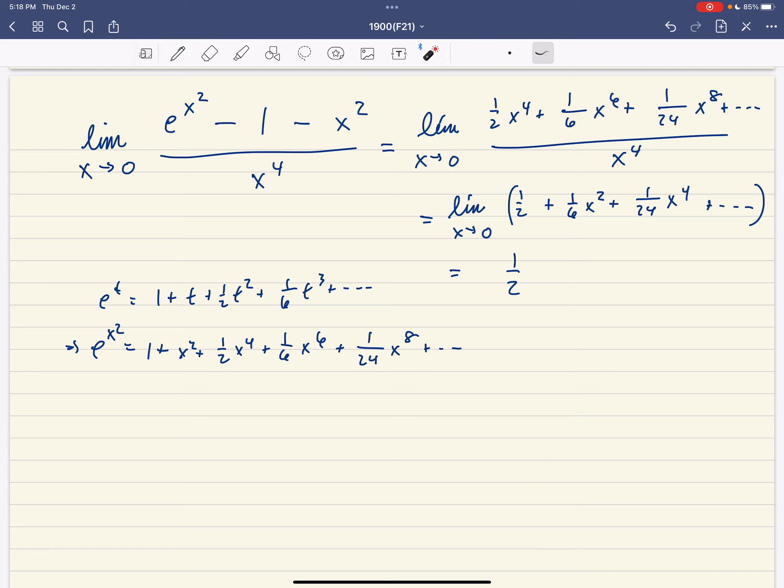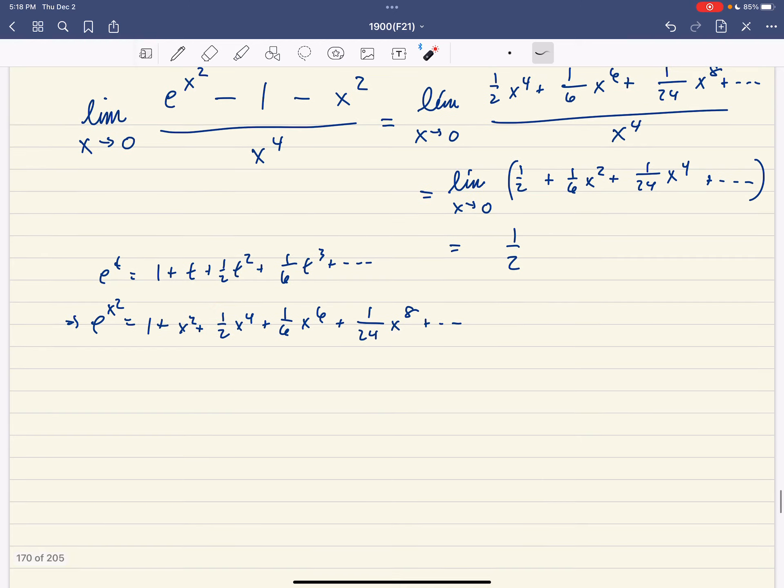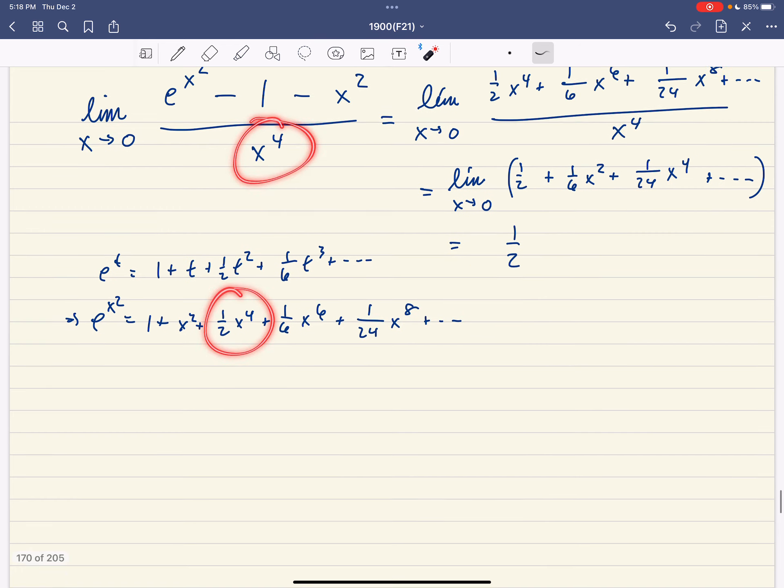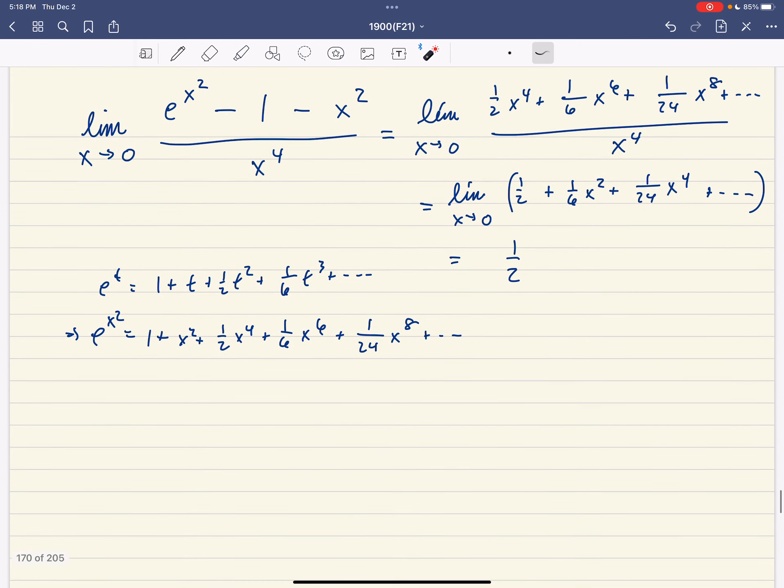So we can use Taylor series to evaluate that limit right away. I know that that's going to be 1 half because we'll get a 1 half in the Taylor series expansion if we look at the x to the 4th term. So that's how that would work.